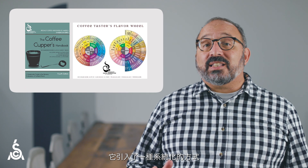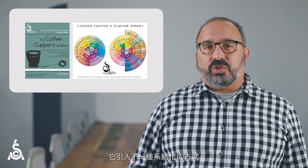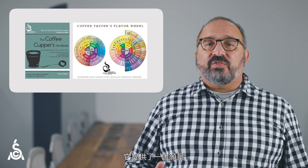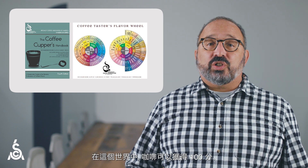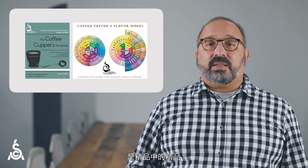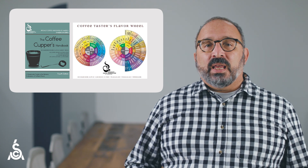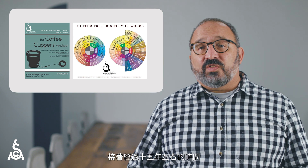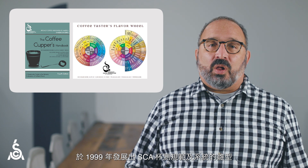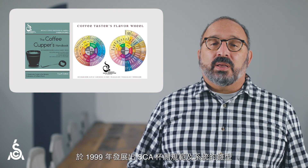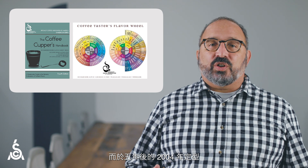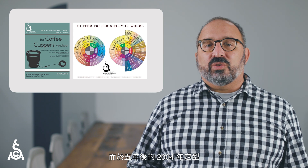It introduced a systematized approach, but it was also aspirational — it offered a vision of a world where coffees could score 100 points if they were the best of the best. It would take another 15 years or so to take shape as the SCA's cupping protocol and system in 1999, which would then settle about five years later in 2004.